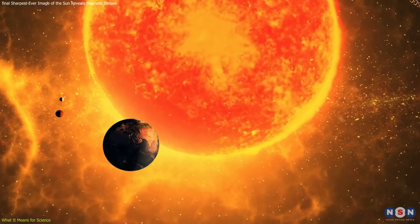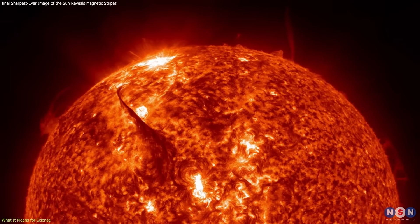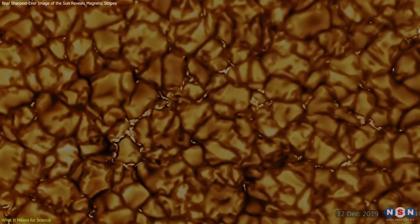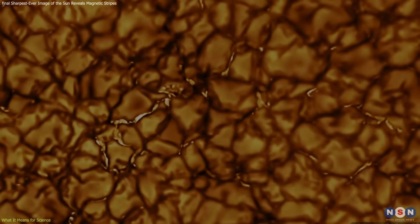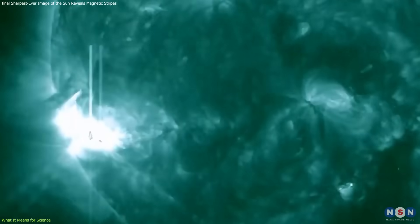This matters for Earth because most disruptive solar activity, like flares and coronal mass ejections, begins with magnetic instability. Understanding how magnetism operates at small scales improves our ability to forecast when and where these events may occur.